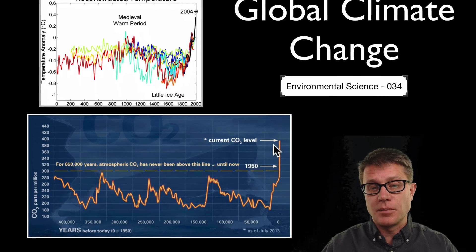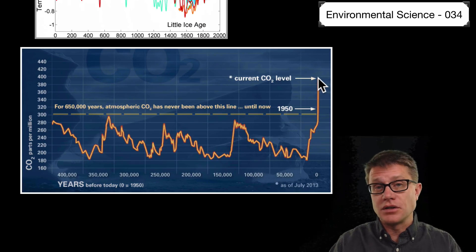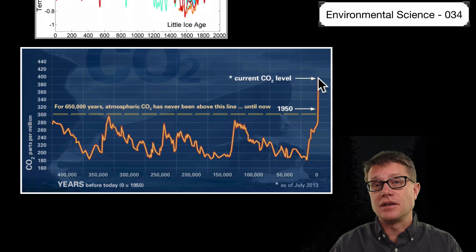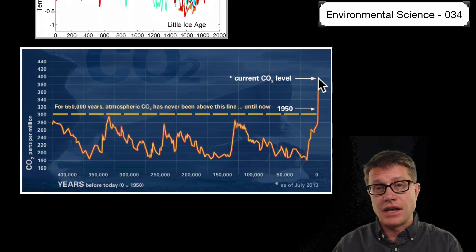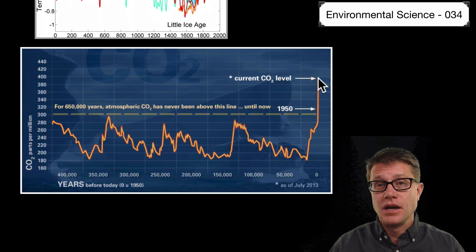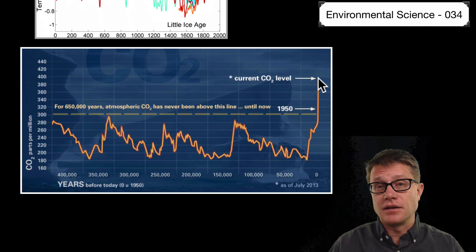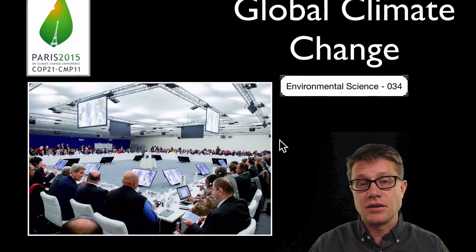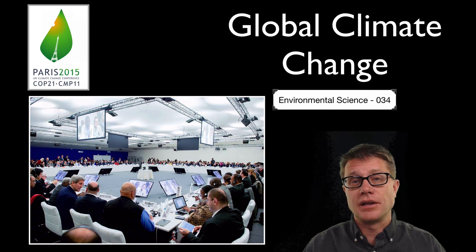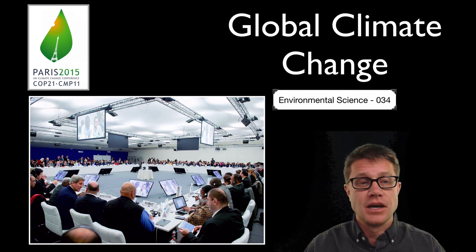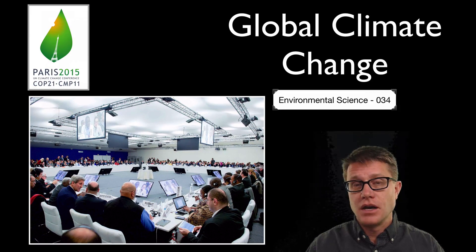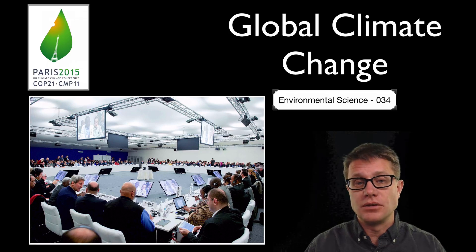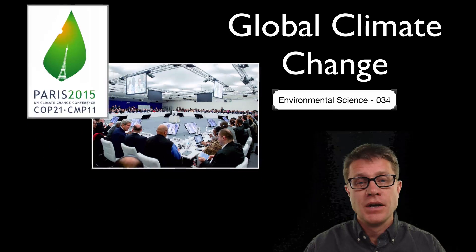If we look at carbon dioxide levels in the atmosphere post-industrialization, we haven't seen these levels in the last 400,000 years. Countries and the environment are going to be affected by this, and so they have been meeting over the last two decades at the UN climate change conference to figure out how we can reduce these greenhouse gases.